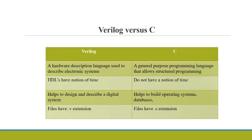Now we are going to see the difference between Verilog and C. Verilog is a Hardware Description Language whereas C is a Programming Language. Verilog has a notion of time; C does not have any notion of time. Verilog helps to design and describe a digital system, whereas C helps to build operating systems and databases. Verilog has an extension of .v.